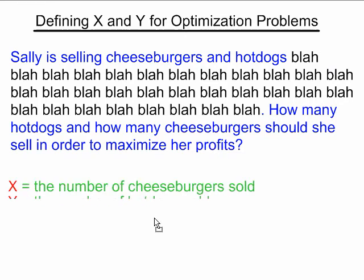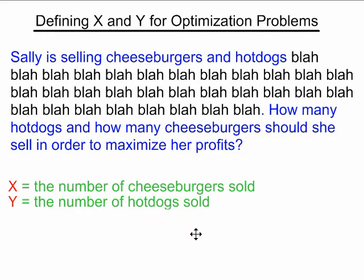You can define your variables as: x equals the number of cheeseburgers sold, and y equals the number of hot dogs sold. Looking at the question at the end makes this very easy to do.